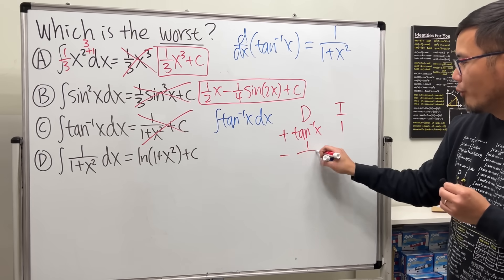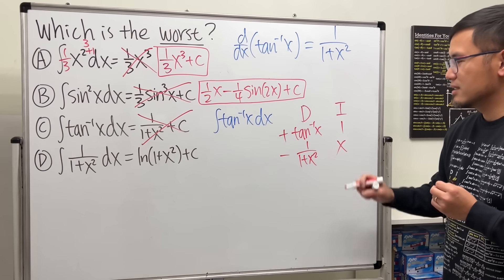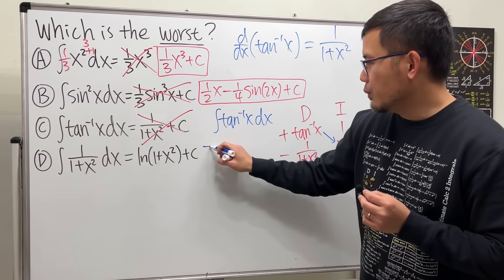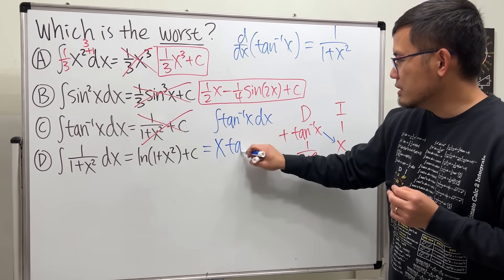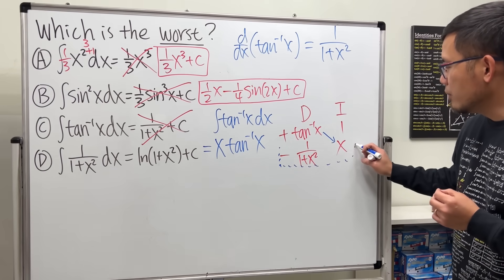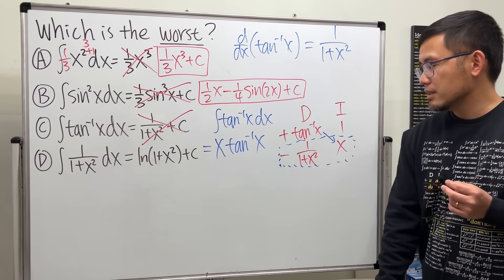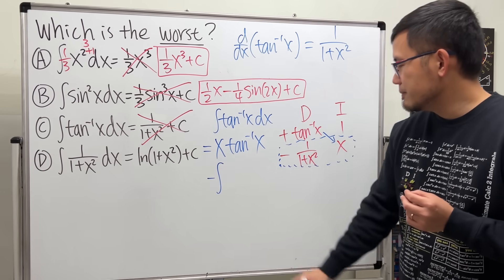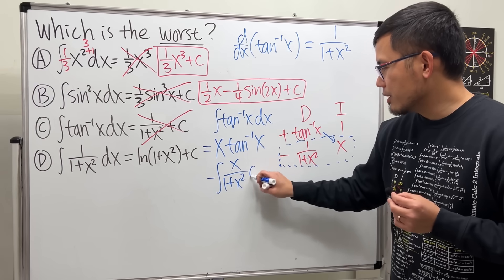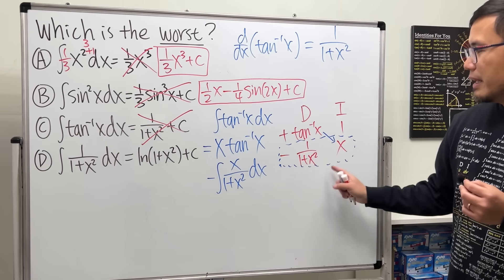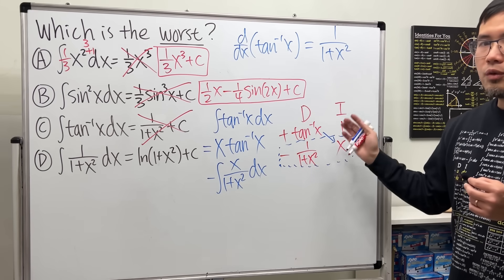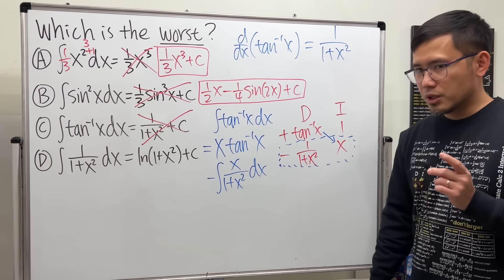Differentiating arctan(x) gives 1/(1 + x²), and integrating 1 gives x. Multiply diagonally: the first part of the answer is x times arctan(x). Then multiply across that row and put it under an integral with a minus sign: minus ∫x/(1 + x²) dx. This is the second step of the DI method — integrating a product of a row. For more details I'll have the tutorial linked in the description.